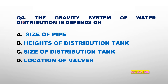Question number 4: The gravity system of water distribution depends upon — size of pipe, height of distribution main, size of distribution main, or location of valves? The answer is height of distribution main.